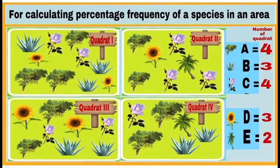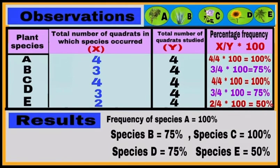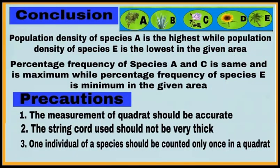Now make the observation table to calculate percentage frequency of each species. The columns are: plant species, total number of quadrats in which species occurred (X), total number of quadrats studied (Y), and percentage frequency = (X / Y) × 100. The results are: species A and C = 100%, species B and D = 75%, and species E = 50%.